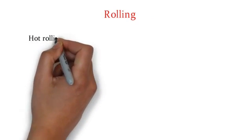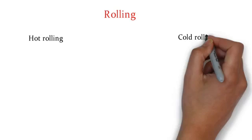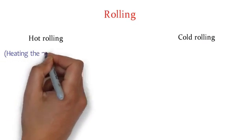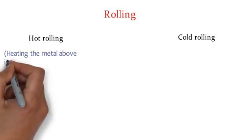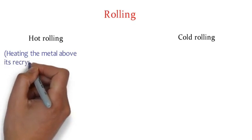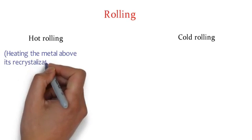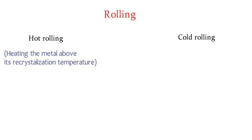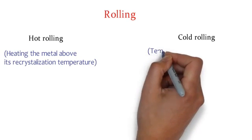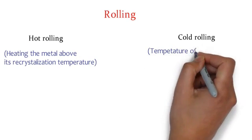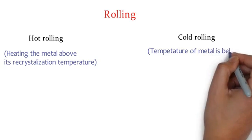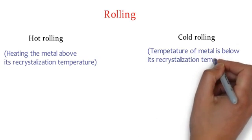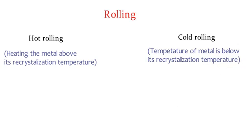Now what is hot rolling? The rolling process in which metal to be passed between the rollers is heated above its recrystallization temperature, then the process is known as hot rolling. And obviously, if the temperature of metal to be passed between the rollers is less than recrystallization temperature, then the process is known as cold rolling.